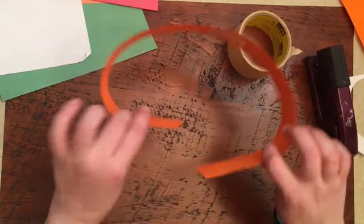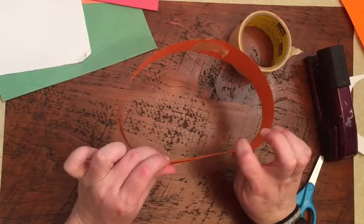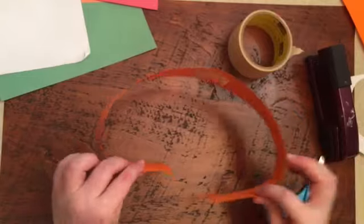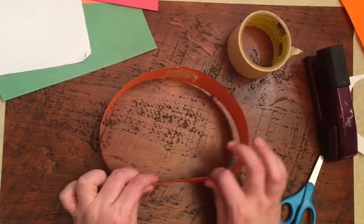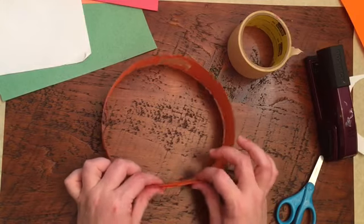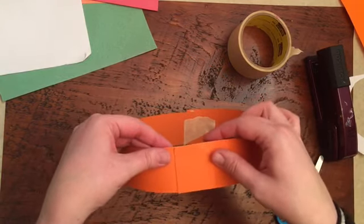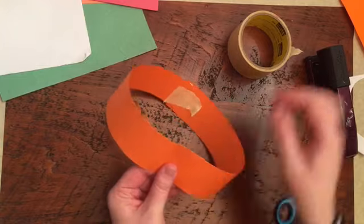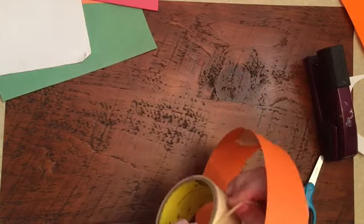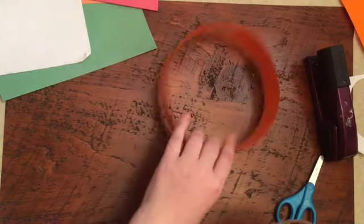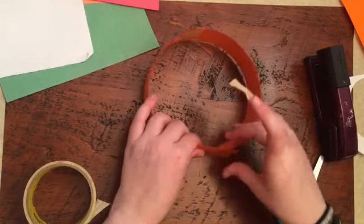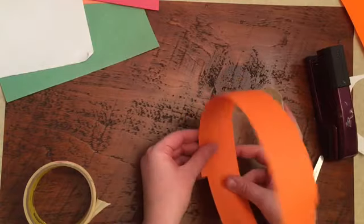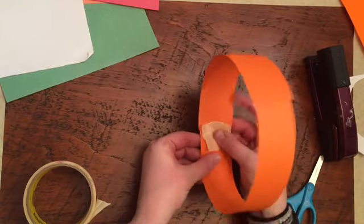Then you have to put this around your head like this, my hair is wet sorry. So you got to put this around your head and measure where you need to tape at the back. You're going to be taping a little bit in and you're always going to put the tape on the inside because tape is ugly.